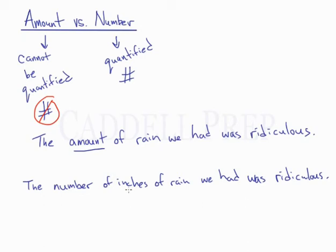Because in this case we can count inches. You could have three inches, five inches, ten inches of rain. So because we can apply a number to it, we use number.